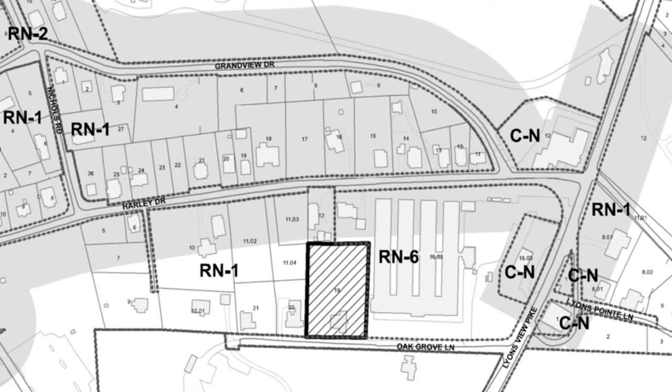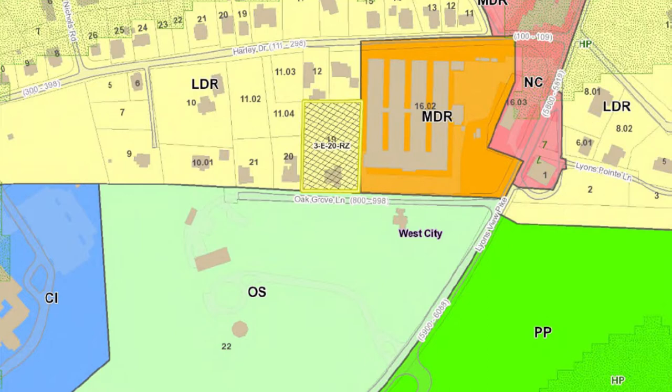Agenda item number 13. The applicant is Victor Jernigan. The location is the north side of Oak Grove Lane east of Lions View Pike. The approximate size of the tract is 0.95 acres. The present zoning is RN1 single-family residential neighborhood. The zoning requested is RN2 single-family residential neighborhood. The existing land use is single-family residential, and the staff recommendation is to approve RN2 zoning because it is consistent with the West City Sector Plan designation of LDR low-density residential land use classification for this property.